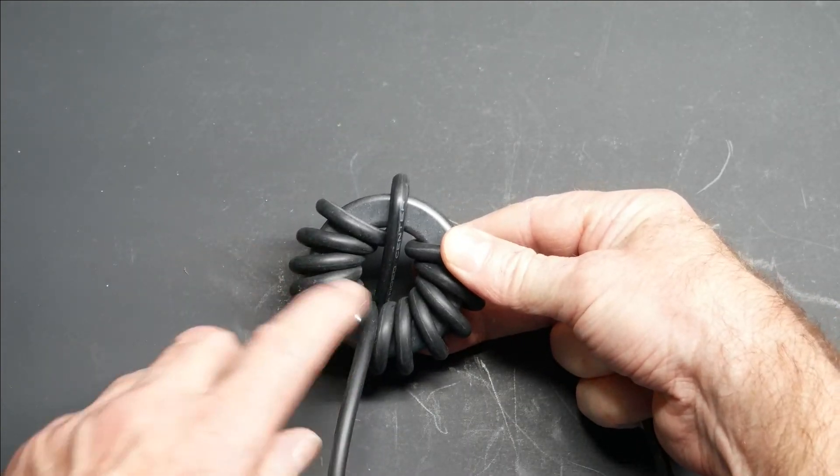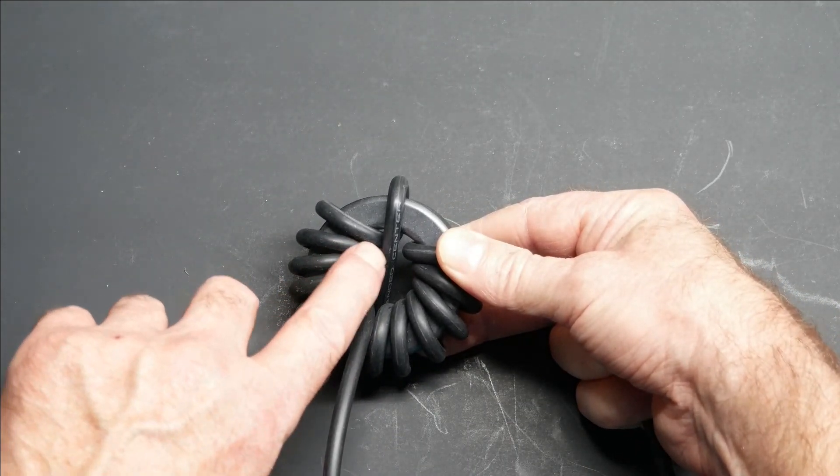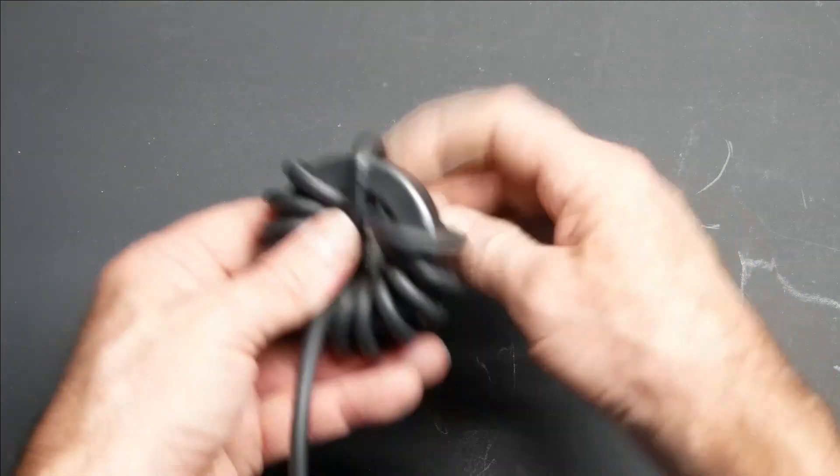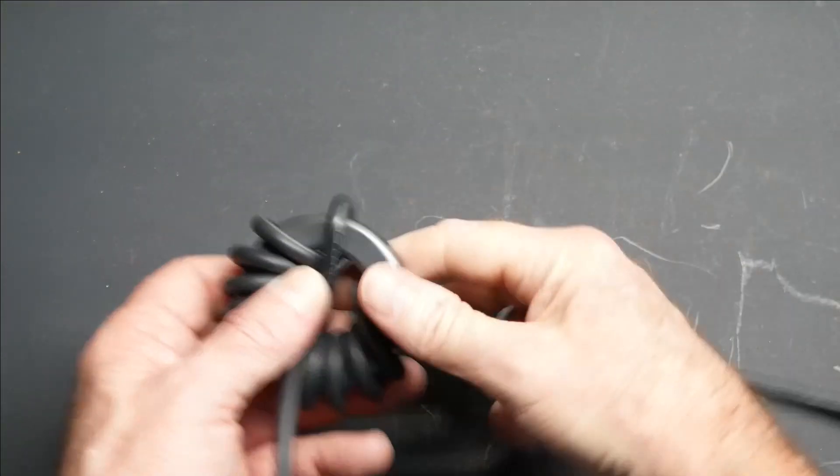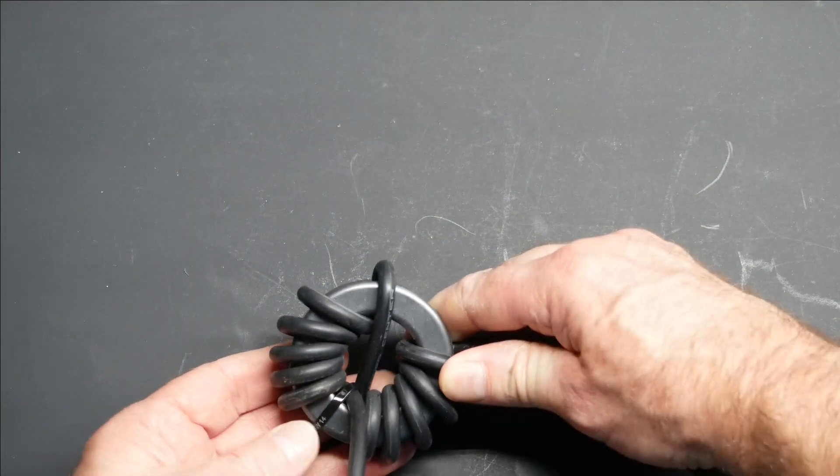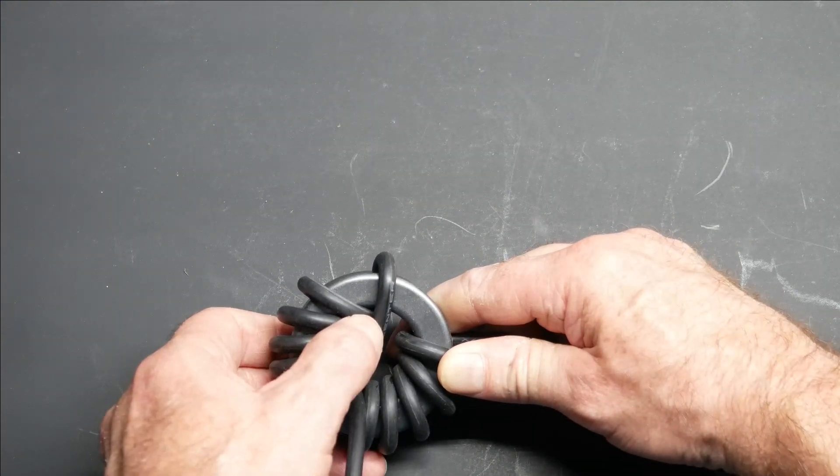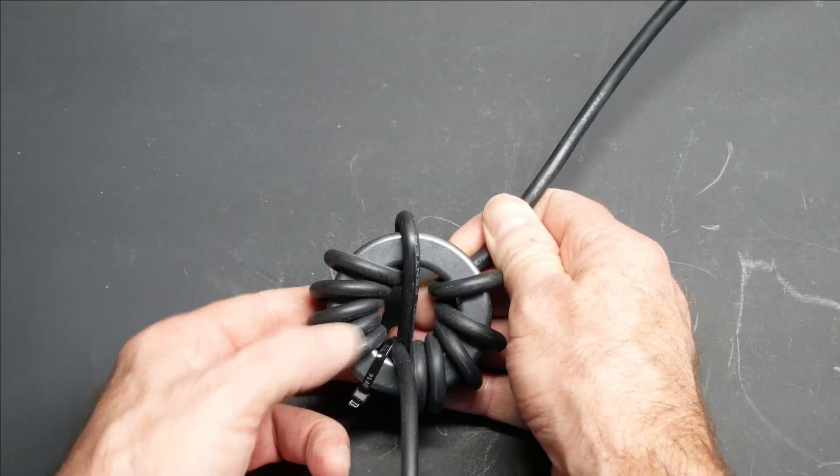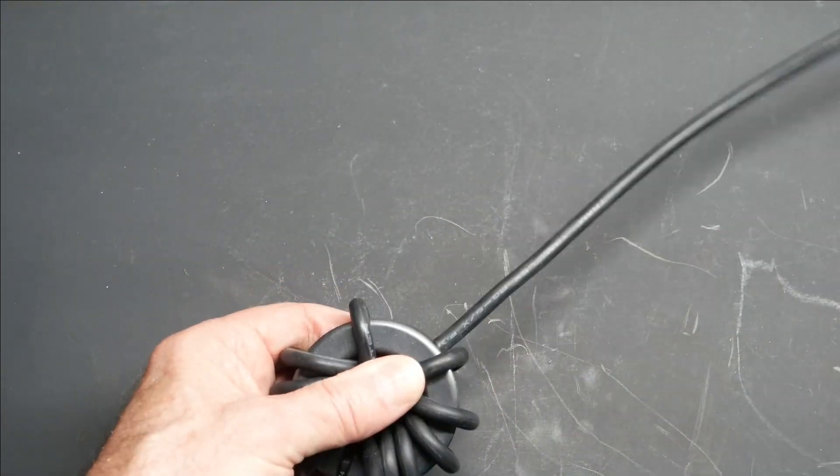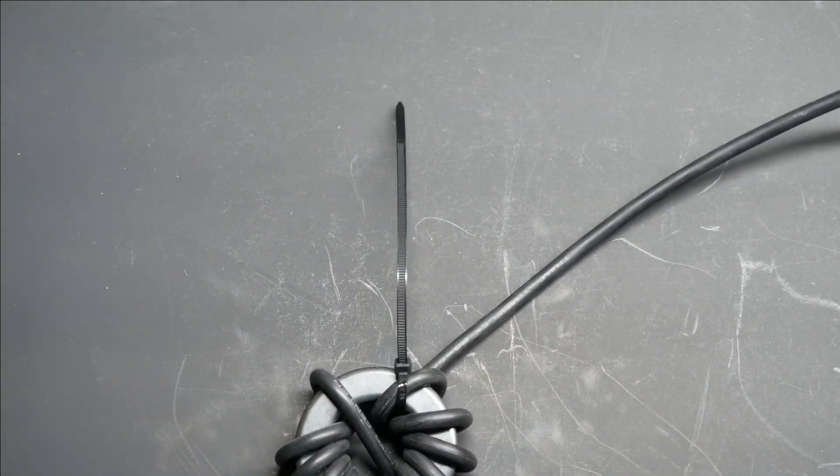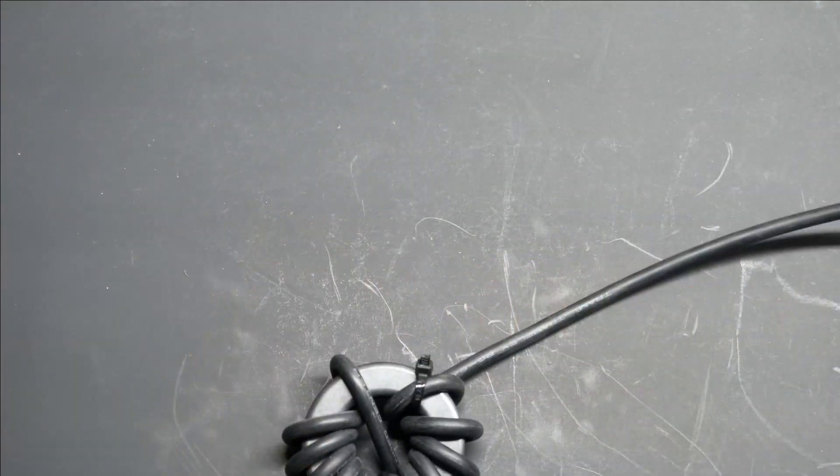And I'm just going to verify. So we have one, two, three, four, five, six turns in the counterclockwise direction. Then we have one, two, three, four, five, six. So six turns through the center counterclockwise, then six turns clockwise. These turns are counterclockwise. These turns are clockwise. And we'll anchor that with another zip tie. Make sure it's nice and tight, and there you have it.